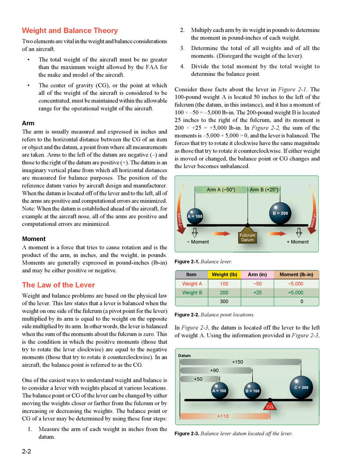Weight and Balance Theory: two elements are vital in weight and balance considerations of an aircraft. First, the total weight of the aircraft must be no greater than the maximum weight allowed by the FAA for the make and model. Second, the center of gravity, CG — the point at which all aircraft weight is considered concentrated — must be maintained within the allowable range for the operational weight.